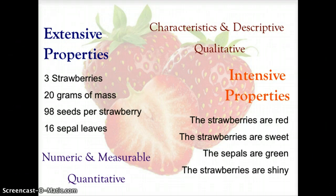Now over on the right side, we have a list of intensive properties. The strawberries are red, the strawberries are sweet, the sepals are green, the strawberries are shiny. These are characteristics and descriptive, so they are qualitative because they're the quality of the matter.